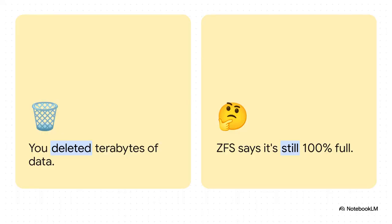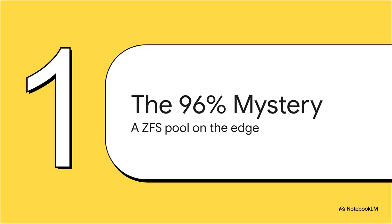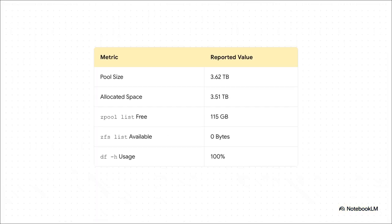This really lays out the whole problem. On one hand, you did your part — you deleted terabytes of data. But on the other hand, ZFS is just sitting there telling you, nope, still 100% full. How is that even possible? Our investigation centers on a real-world example from a Proxmox user. They're running a ZFS pool on some mirrored hard drives for their Plex server, and suddenly they find themselves completely trapped in this exact situation, their storage pushed right to the absolute breaking edge.